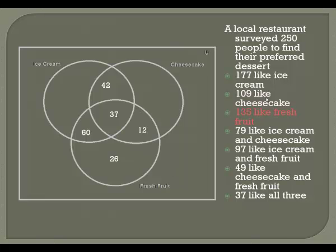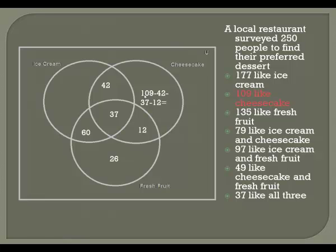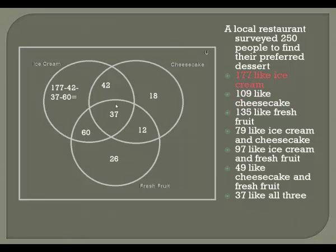Similarly, with the 109 who liked cheesecake, I need to subtract away the 42 who liked ice cream and cheesecake, the 37 who liked all three, and the 12 who liked fresh fruit and cheesecake but not ice cream. And 177 like ice cream — I need to subtract away those three items to get 38 who liked only ice cream.